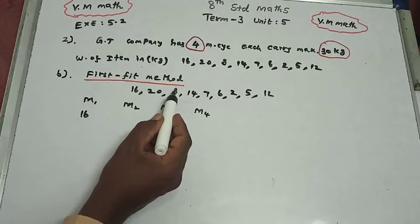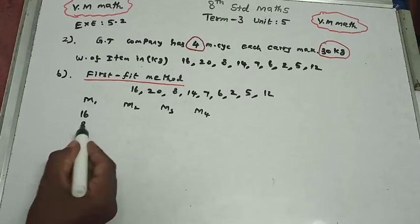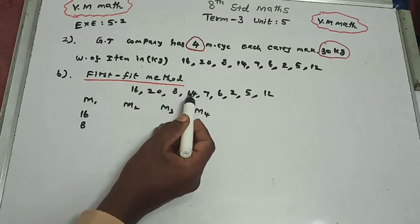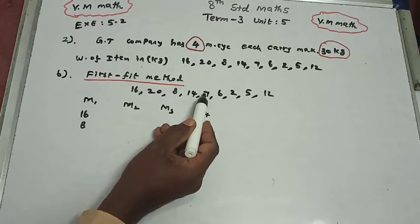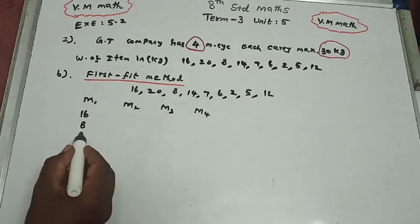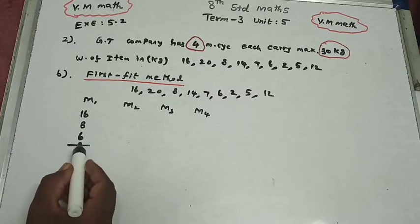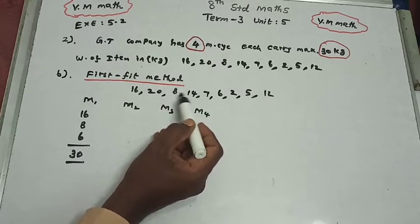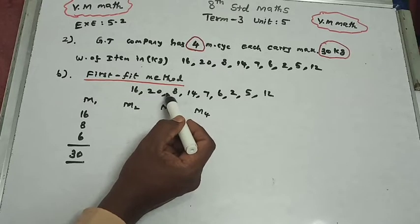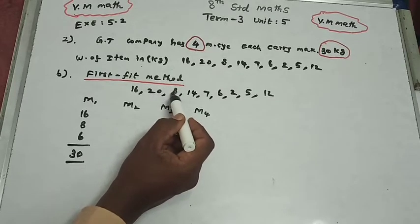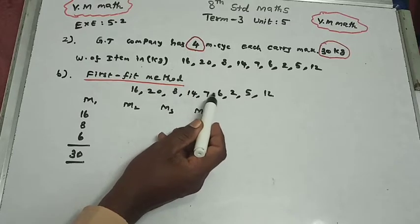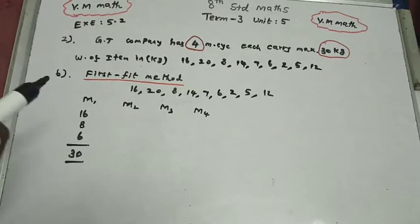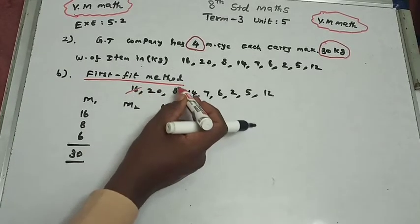We check items above or below 30 kg capacity. If we add items and the total is above 30, we cannot add more. If below 30, we can add. Adding item 1: we add and check — if 30 or less, we add the next item.